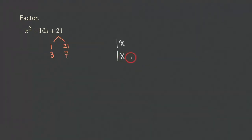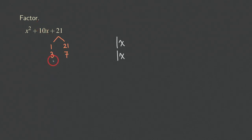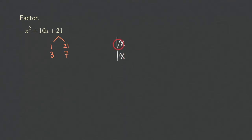Since we're doing trial and error, we pick a choice and think about how to get the correct combination. We look at the middle term's coefficient, which is 10. We consider whether adding or subtracting one and 21 gives us 10, or whether adding or subtracting three and seven gives us 10. The answer is obvious — we add three and seven to get 10, so we choose the three and seven combination. The order of three and seven doesn't really matter here since we have one X and one X, so let's put three first and then seven.